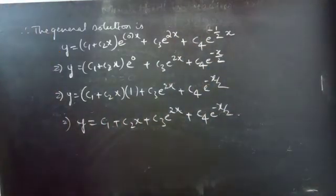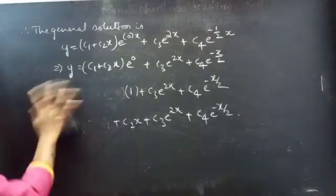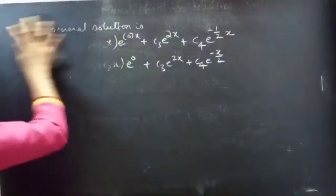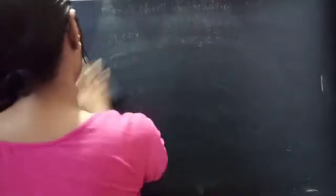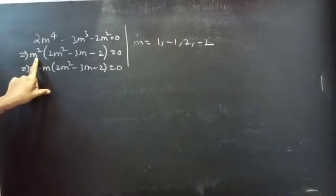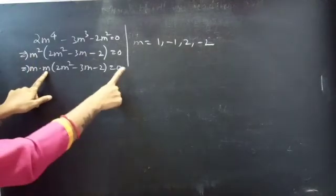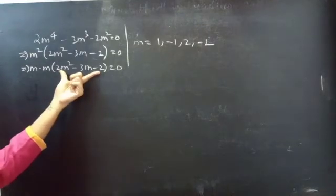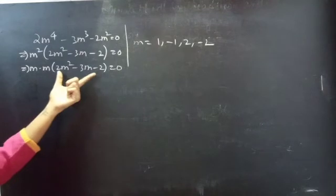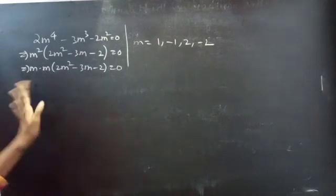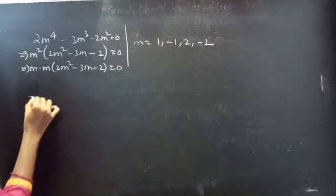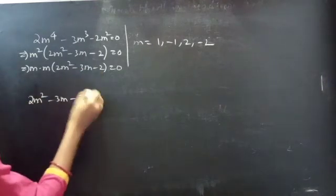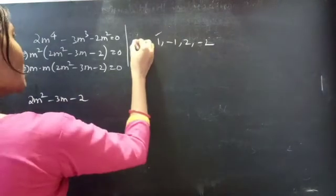Now let's see what we get using the synthetic division method. I'll show you the roots obtained using this method. From m², we get m = 0 and m = 0 as two roots. We will consider the polynomial 2m² - 3m - 2 and find its factors using synthetic division, checking which value of m satisfies this polynomial.